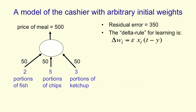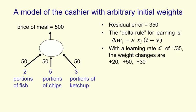We use the delta rule for revising our prices of portions. We make the change in a weight, delta w_i, equal to a learning rate epsilon times the number of portions of the i-th thing times the residual error — the difference between the target and our estimate. If we make the learning rate 1/35 so the math stays simple, then the learning rate times the residual error for this example is 10. So our change in the weight for fish will be 2 times 10, increasing it by 20. Our change in the weight for chips will be 5 times 10, and for ketchup will be 3 times 10.